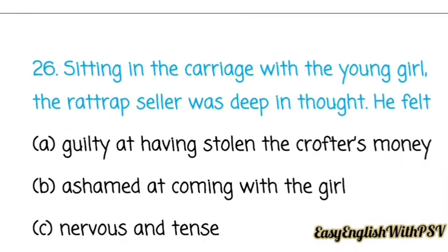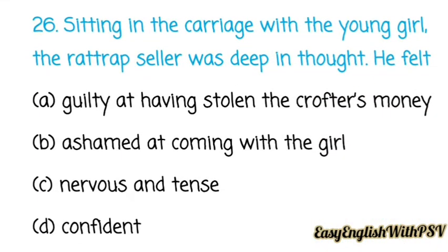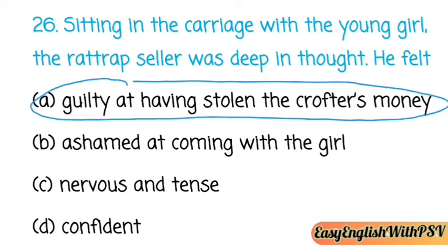Question number twenty-six: Sitting in the carriage with the young girl, the rat trap seller was deep in thought. He felt — guilty at having stolen the crofter's money, ashamed at coming with the girl, nervous and tense, or confident? He was feeling guilty at having stolen the crofter's money.